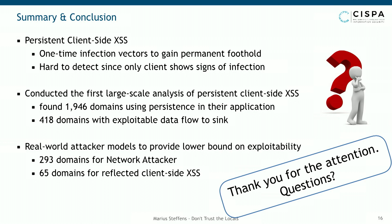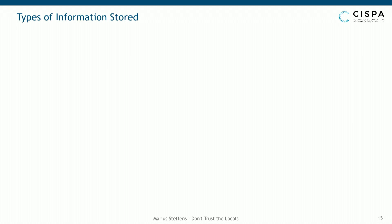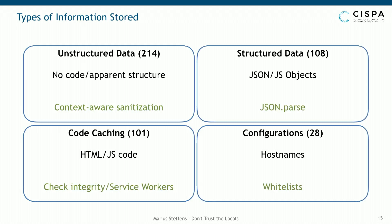Audience question: You explored the types of data stored in local storage. Is it your opinion that you should not be storing any code there, and should just be storing well-defined JSON data that you can properly parse — and anything else is just an abuse of the local storage mechanism?